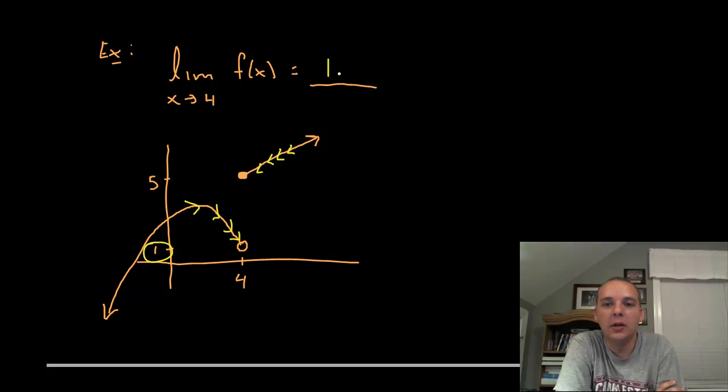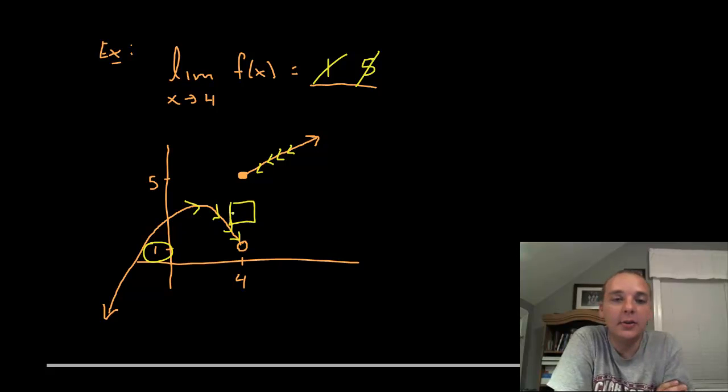And from the right hand side of 4 seems like it is approaching a y value of 5. So what's the answer, is it 1, is it 5, is it 1 and 5? I've even seen some students in my classes split the difference and say that the limit is 3 but that's silly. There's no y values that are approaching 3.